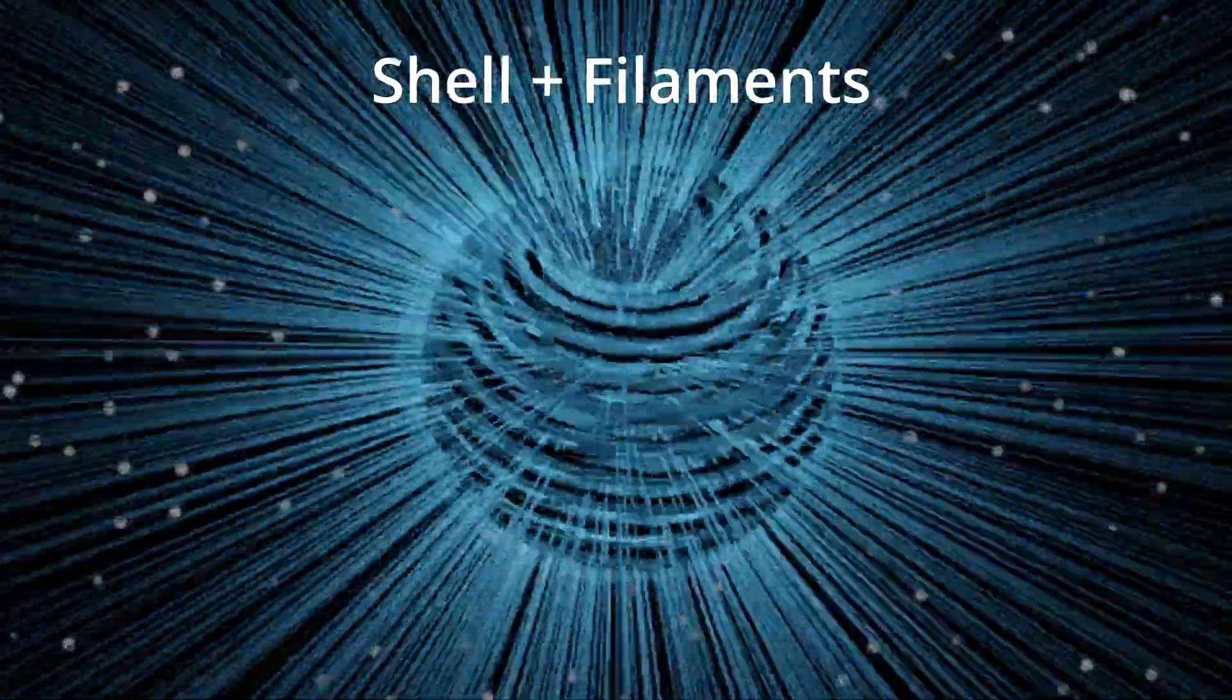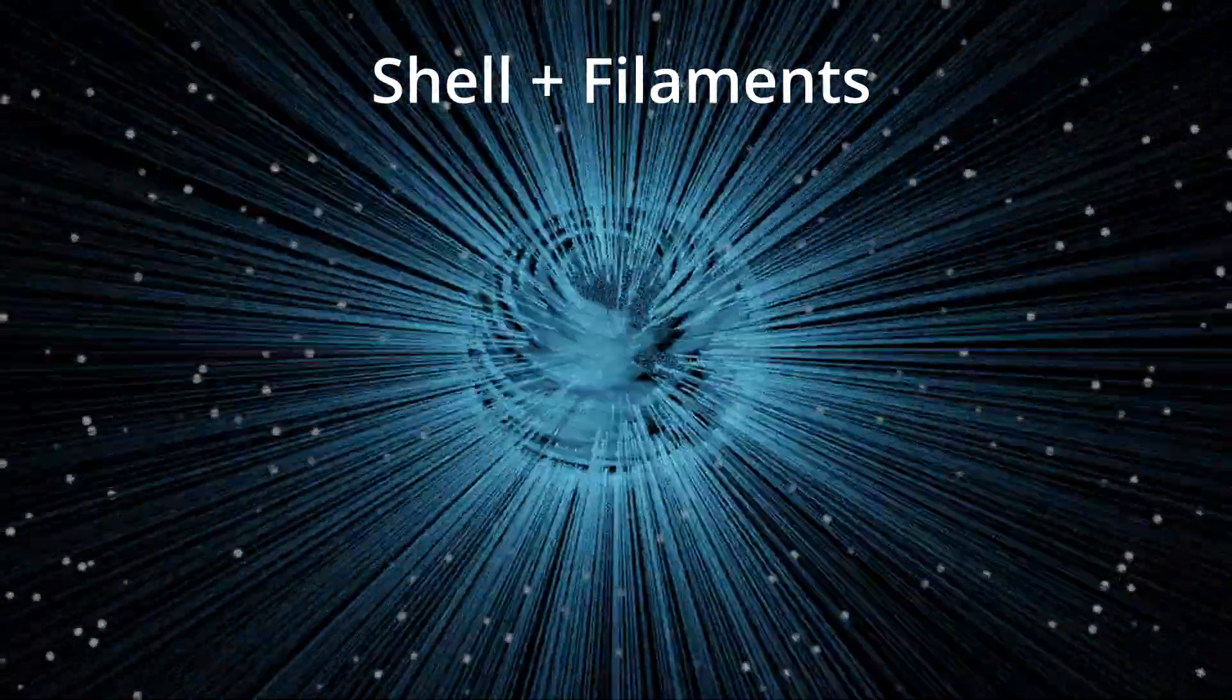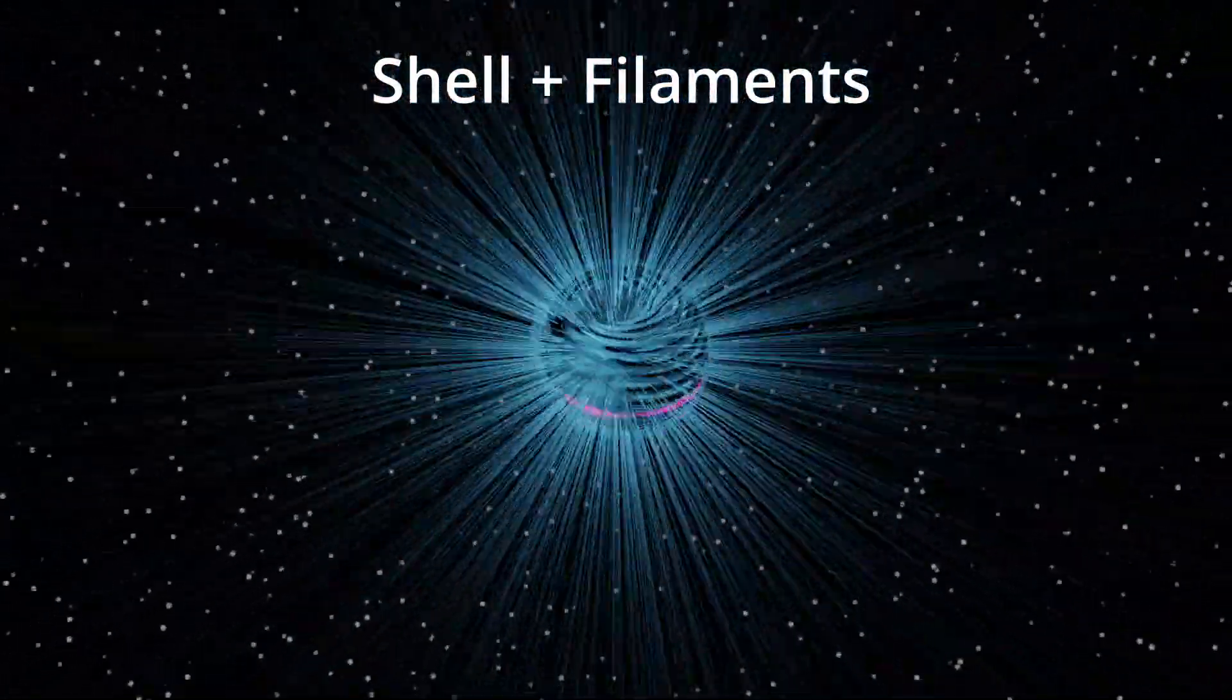And if we add the rarefied portions of the RDF to our S shell, we see that radial electron filaments extend in all directions and out to neighboring atoms.